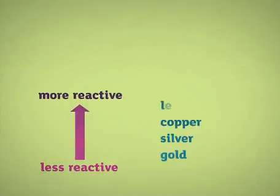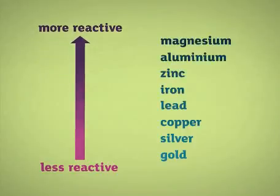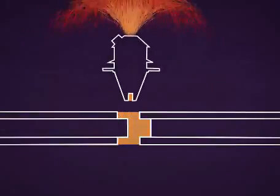Now I understand displacement reactions. The reactivity series lists metals in order of how reactive they are. A more reactive metal will displace a less reactive metal from a compound. Like in the thermite reaction.